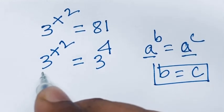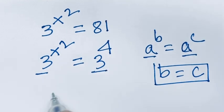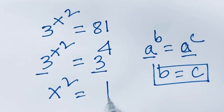Now we have 3 here and 3 here. The bases are the same, so I can say x squared equals 4.